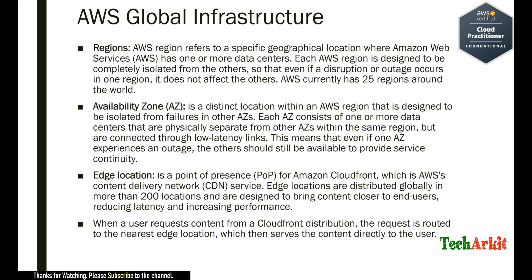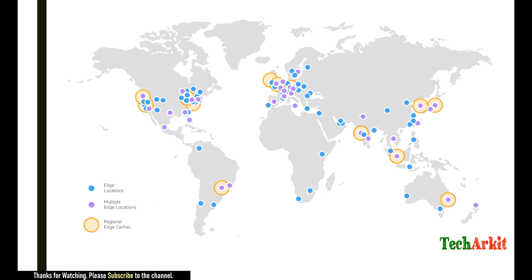When a user requests content from a CloudFront distribution, the request is routed to the nearest edge location, which then serves the content directly to the user. That is the benefit of edge locations and the CDN network.